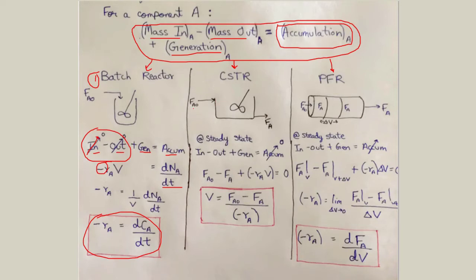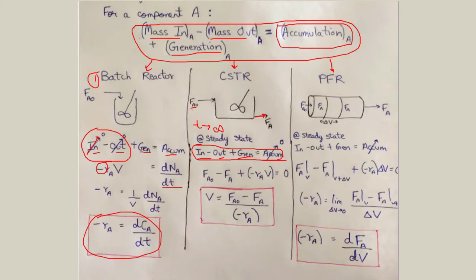Moving on to the CSTR, we have FA0, the initial flow rate of A, and FA, the final flow rate of A exiting the CSTR. At steady state, in minus out plus generation equals accumulation. When time tends to infinity FA0 and FA are constant, so there is no accumulation and the level of the CSTR is constant. This gives us FA0 minus FA plus the rate at which A is consumed equals zero, which is the CSTR design equation.